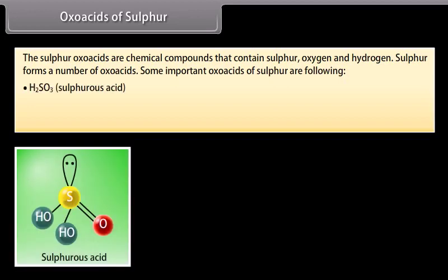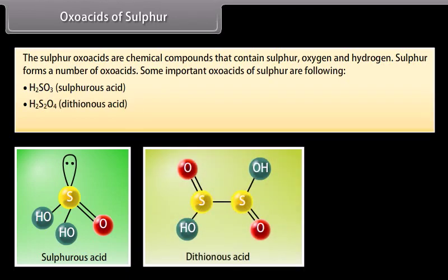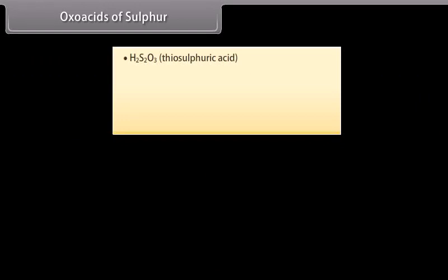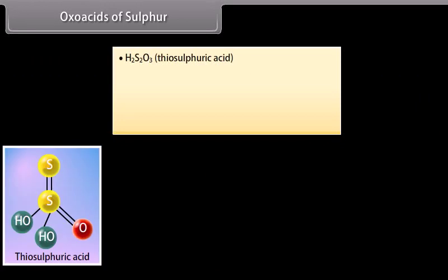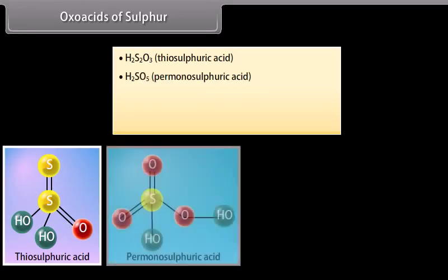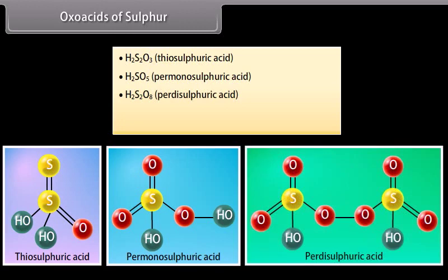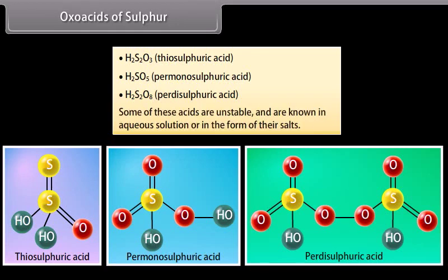H2SO3, sulfurous acid; H2S2O4, dithionous acid; H2SO4, sulfuric acid; H2S2O3, thiosulfuric acid; H2SO5, permonosulfuric acid; H2S2O8, perdisulfuric acid. Some of these acids are unstable and are known in aqueous solution or in the form of their salts.